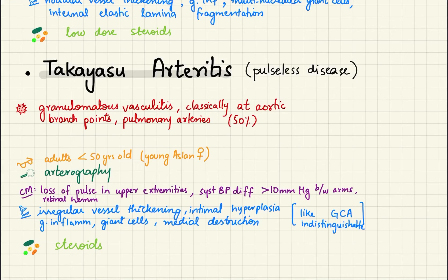Takayasu's arteritis is known as pulseless disease. It classically involves areas at aortic branch points. The important features are loss of pulse in the upper extremities and a systolic blood pressure difference between the arms. That covers all the key points on vasculitis.